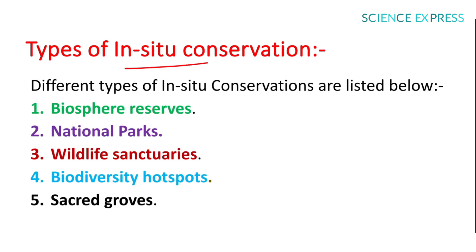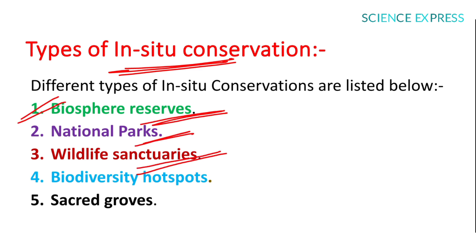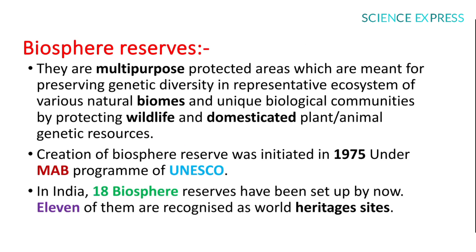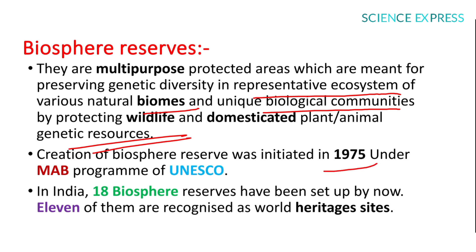Types of in-situ conservation include biosphere reserves, national parks, wildlife sanctuaries, biodiversity hotspots, and sacred groves. Biosphere reserves are multi-purpose protected areas meant for preserving genetic diversity in representative ecosystems of various natural biomes and unique biological communities by protecting wildlife and domesticated plant and animal genetic resources.